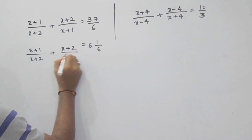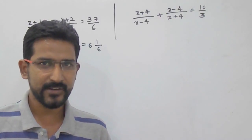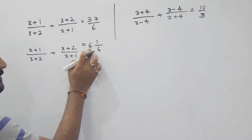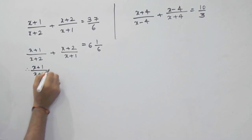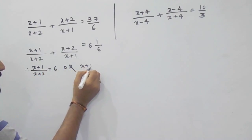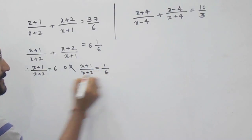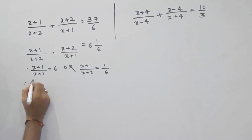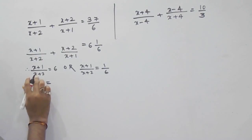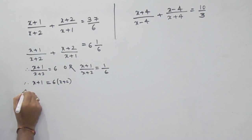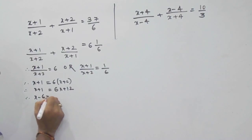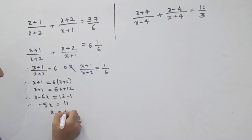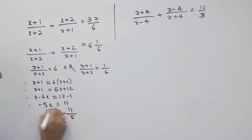So we can apply the shortcut trick that we studied in the last video. Just equate this term with 6 and equate this term with 1 by 6. So (x+1)/(x+2) equals 6. Do cross multiplication: x+1 equals 6(x+2), so x+1 equals 6x+12. Then x minus 6x equals 12 minus 1, giving minus 5x equals 11, so x equals minus 11 by 5.